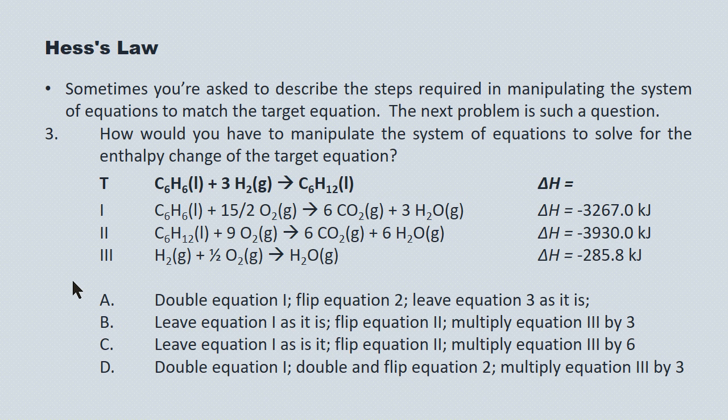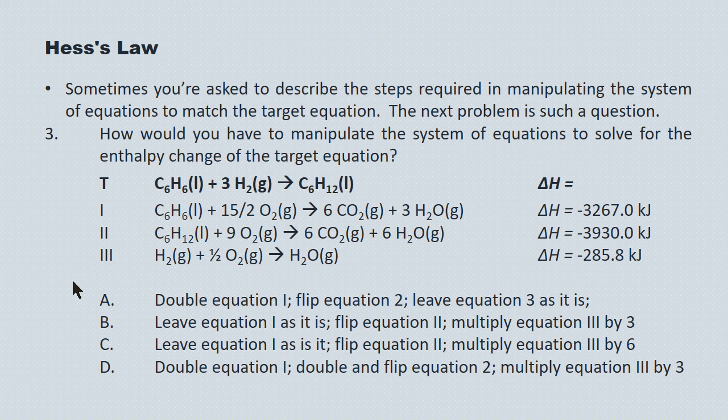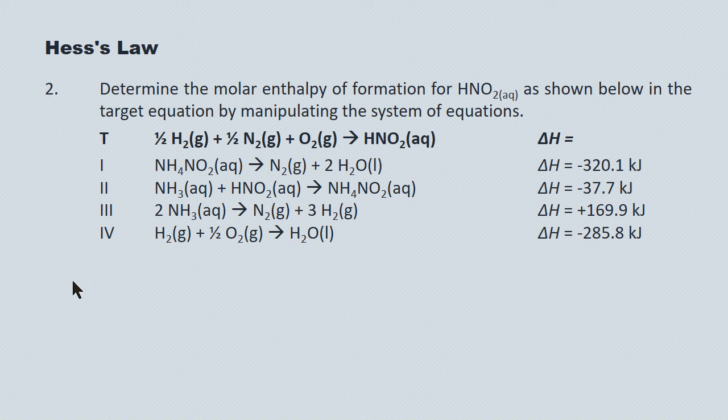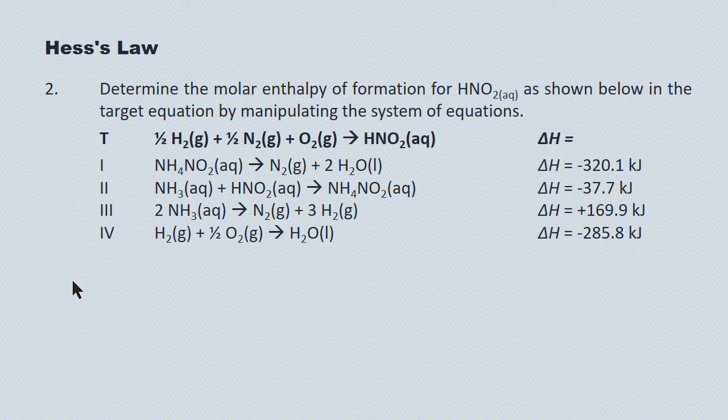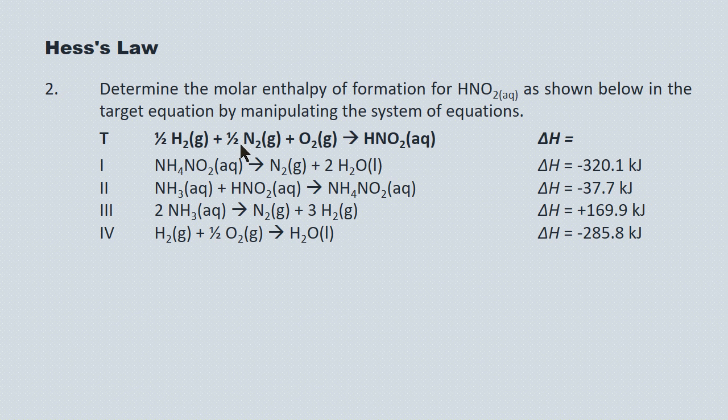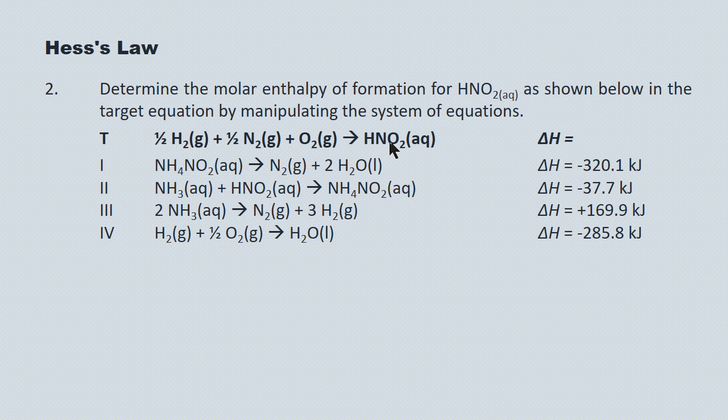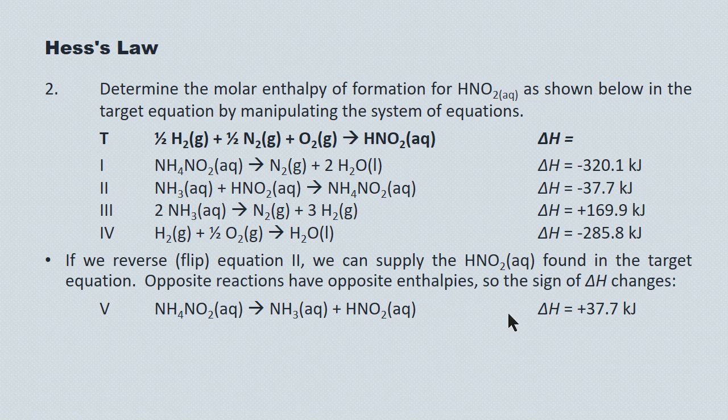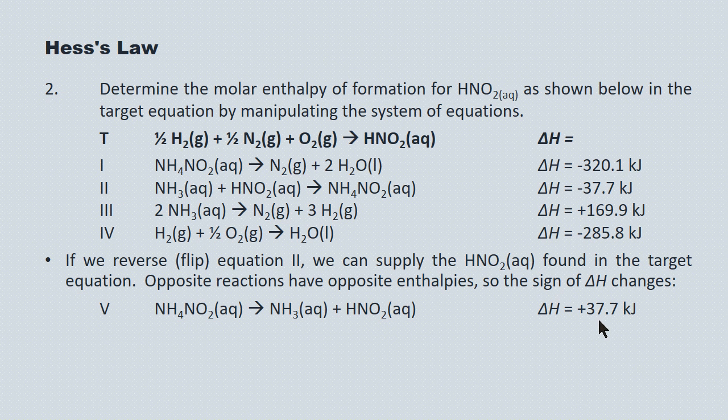I've got one more example before I close up the lecture. It's quite a complicated example. So what I'm going to do is I'm going to post the target, post the system of equations, and perhaps give you a minute to work at it. I'll do the first couple of manipulations, and leave the rest for you to solve. And again, I want to start at the right-hand side here. These fractional coefficients on the left sort of concern me. Perhaps it's a little too complex to start with initially. But the HNO2 only has one source in the system of equations, and that's equation number 2. You'll see in the target equation, it's the product, but in equation 2, it's a reactant. So we want to flip equation 2. You flip an equation, and of course the enthalpy sign reverses. So negative 37.7 becomes positive 37.7.